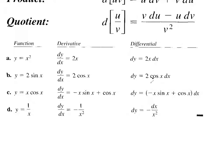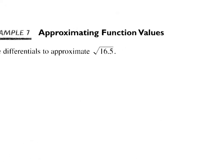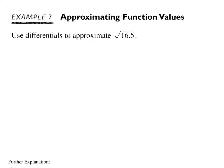Let's do a quick example: use differentials to approximate the square root of 16.5. First, what function are we dealing with? Obviously the square root function. We need to think about what we know. With the square root function, at x equals 16, the value is 4.